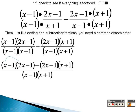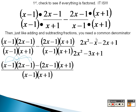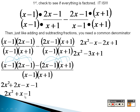Let's FOIL. x times 2x is 2x squared. x times negative 1 is negative x. Negative 1 times 2x is negative 2x. Negative 1 times negative 1 is positive 1. When I combine the like terms there, I get 2x squared minus 3x plus 1. Over here I need to FOIL as well: 2x times x is 2x squared, 2x times 1 is 2x, negative 1 times x is negative x, negative 1 times 1 is negative 1. When I combine like terms, I get 2x squared plus x minus 1.